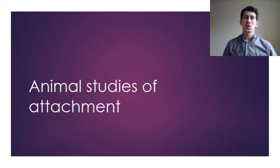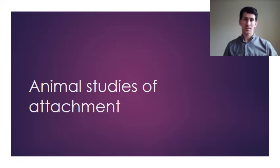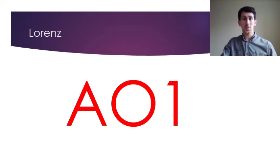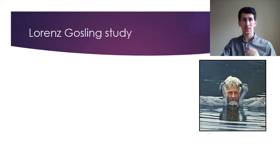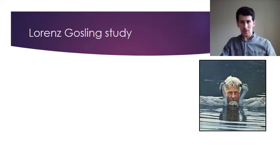This video looks at animal studies, and there have been many animal studies on attachment. A lot of the theories about why attachment occurs are based on animal studies. We're going to look at two main studies: Lorenz's study on geese and Harlow's study on monkeys. You can see Lorenz here with his geese.